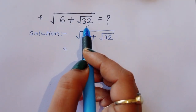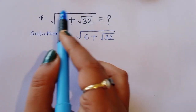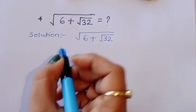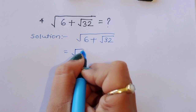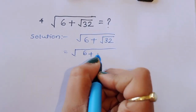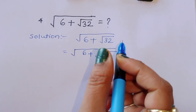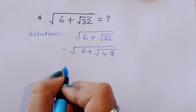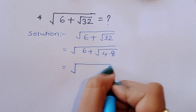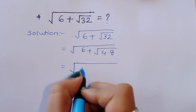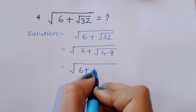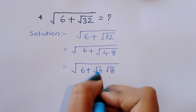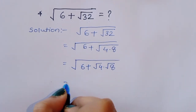We are given square root of 6 plus square root of 32, and we have to find the value of this term. We can write 32 as 4 times 8, so square root of 32 equals square root of 4 times 8.